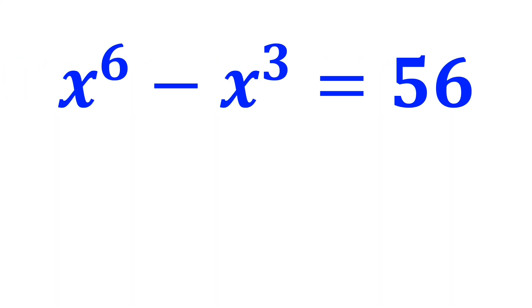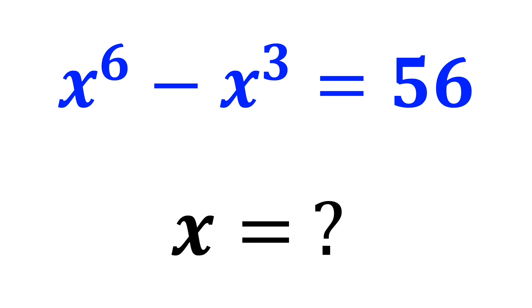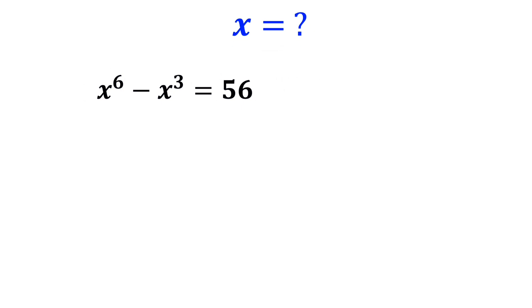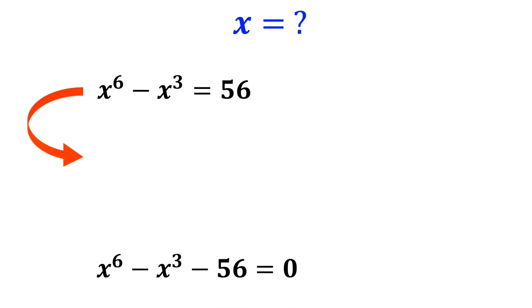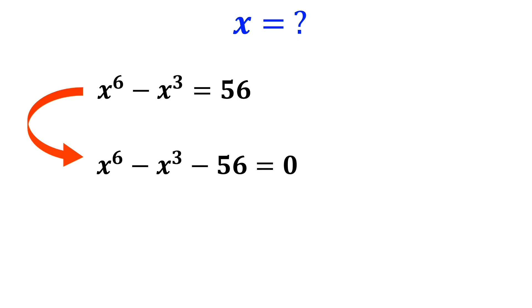If x to the power of 6 minus x cubed equals 56, then what is the value of x? Let's solve it step by step together. First, we write this equation as follows: x to the power of 6 minus x cubed minus 56 is equal to 0.